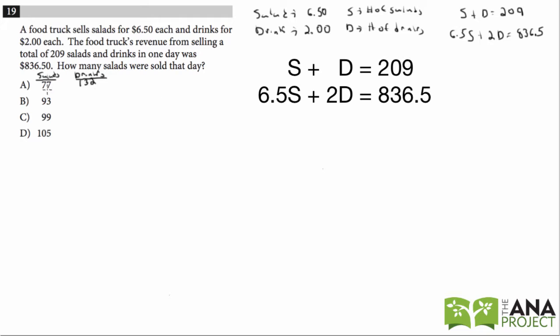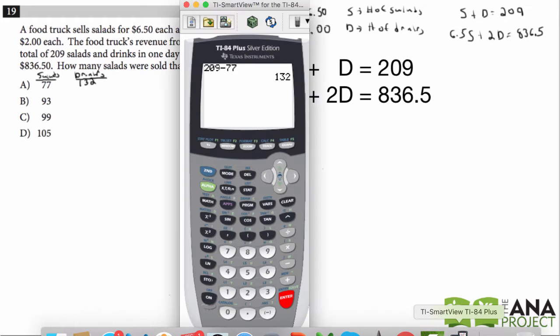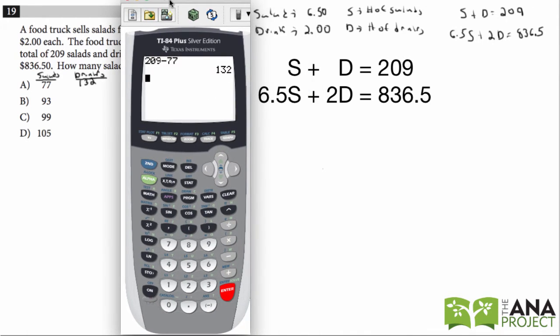So then it would have to work for this one. So 6.5 times 77 salads plus $2 times 132 drinks should equal $836.50. Otherwise it's wrong. So we're kind of using the answer choices and working backwards. So let's try that. This is especially helpful since it's section 4 and we're allowed to use a calculator. Otherwise I don't think I'd use this method if it was section 3. It would be too much calculation.